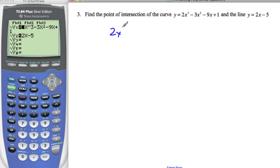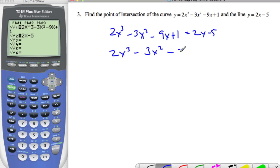So let's make the equation 2x³ - 3x² - 9x + 1 = 2x - 5. Bring everything to one side of the equation, and I get 2x³ - 5x². No, it's not 5x². It is 3x² - 11x + 6 = 0.